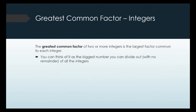It's sort of literal in the name — the greatest factor in common. The way I think about it: the biggest number I can divide out evenly from a list of numbers. So if I'm given 5 and 15, the GCF is the biggest number that divides into both of those numbers. In this case, that would be 5, and so GCF equals 5.